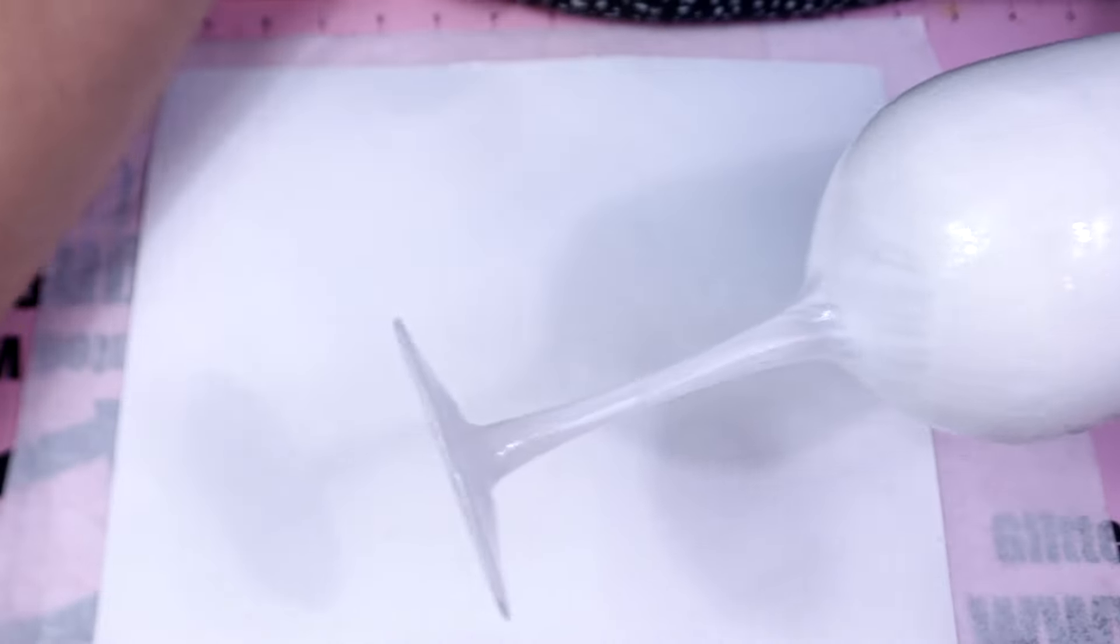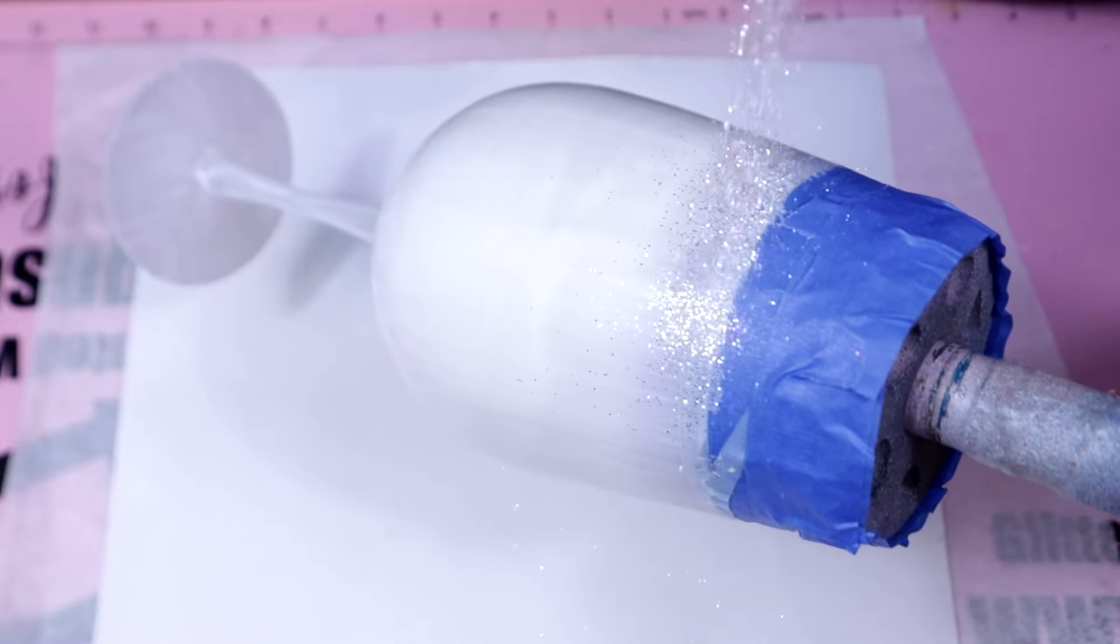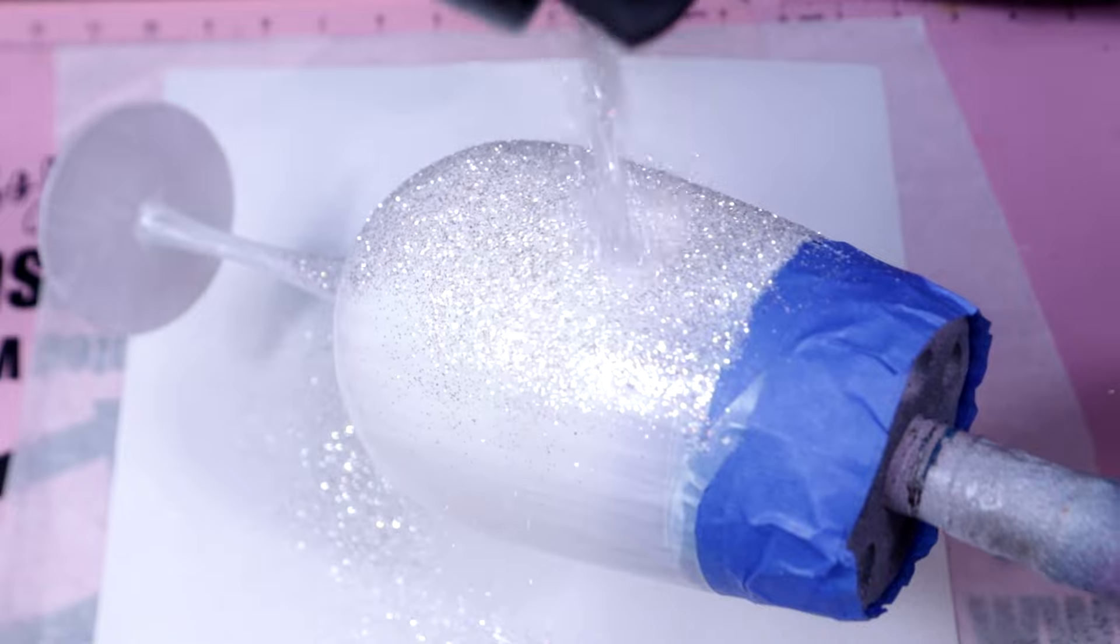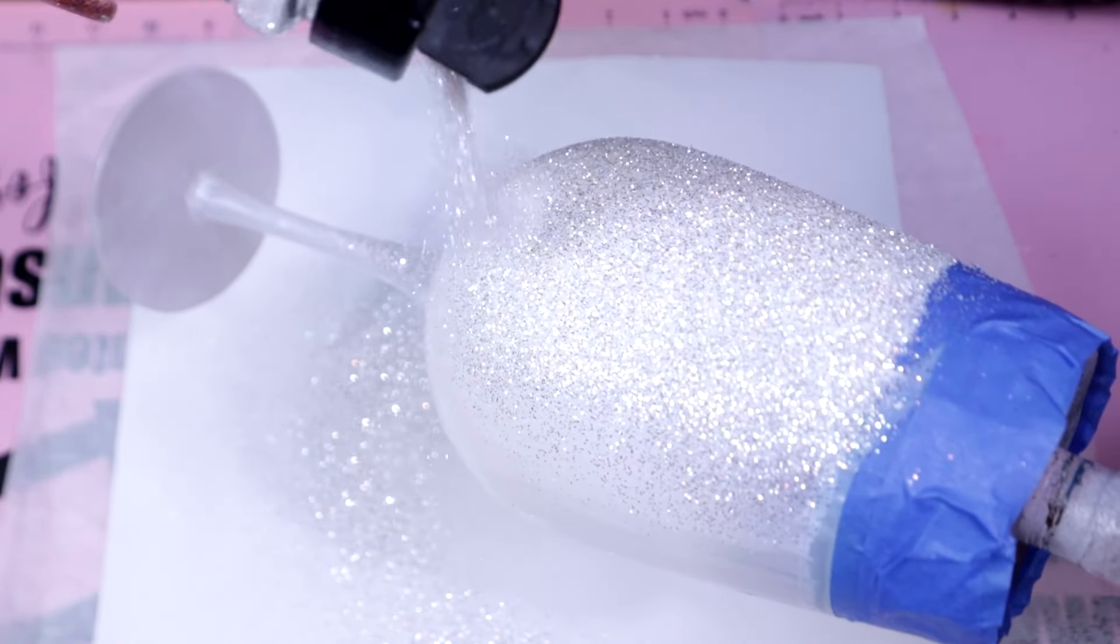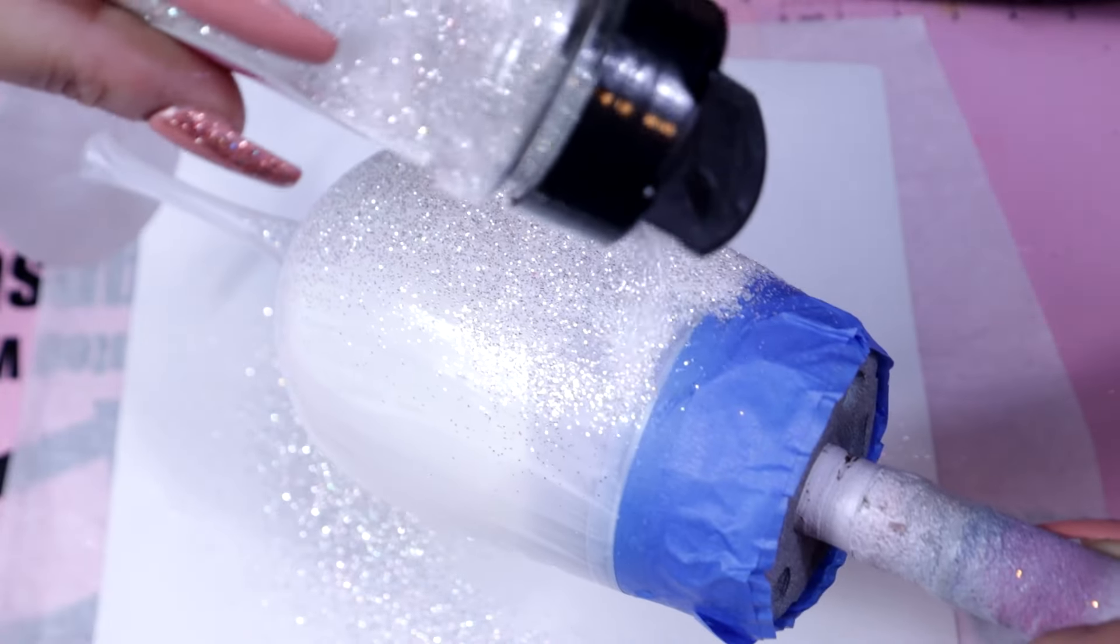Once I was pretty sure I had a nice smooth coat of Mod Podge, it was now time to glitter. And when I tell you guys, this glitter is absolutely amazing. Remember, it's from AB Designs Co. It's like a mirror finish. She's absolutely stunning.